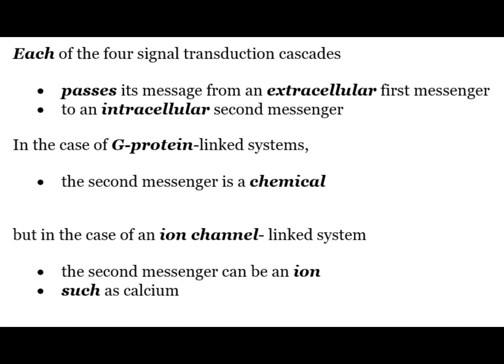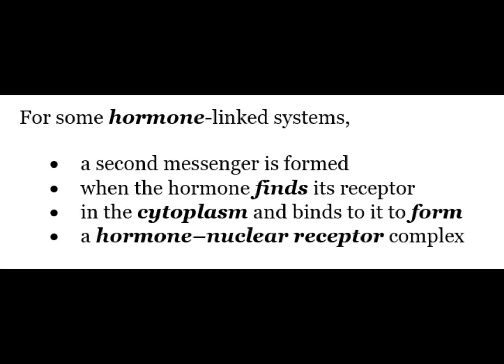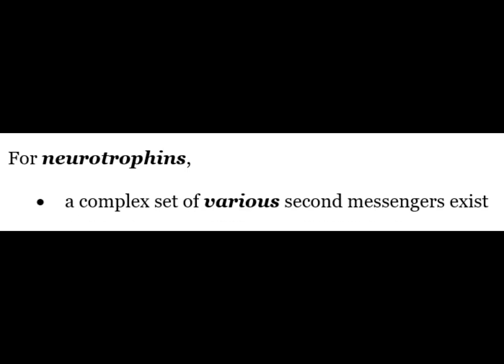Each of the four signal transduction cascades passes its message from an extracellular first messenger to an intracellular second messenger. In the case of G protein linked systems the second messenger is a chemical, but in the case of ion channel linked systems the second messenger can be an ion such as calcium. For some hormone linked systems a second messenger is formed when the hormone finds a receptor in the cytoplasm, binds to it to form a hormone nuclear receptor complex, and for neurotrophins a complex set of various second messengers exist.